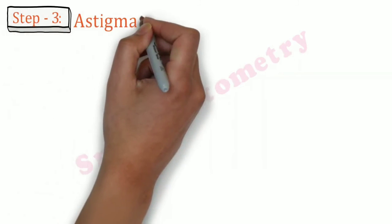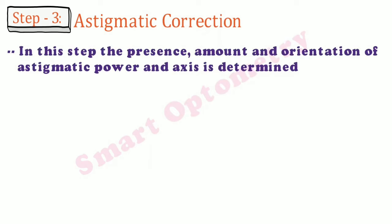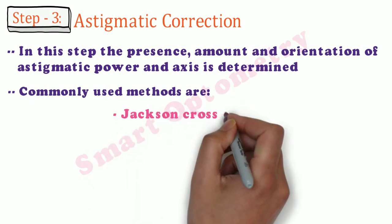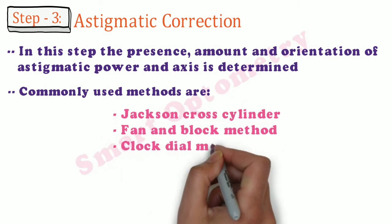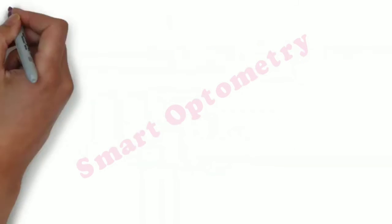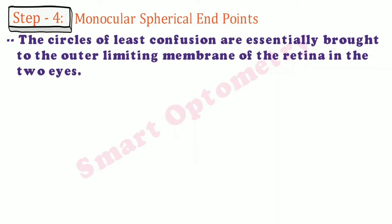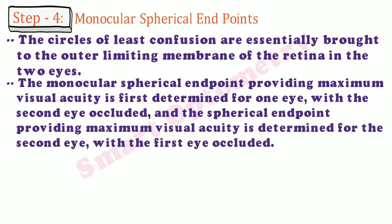Step 3 — Astigmatic Correction: the presence, amount, and orientation of astigmatic power and axis is determined. Commonly used methods are Jackson Cross Cylinder, Fan and Block Method, Clock Dial Method, and Stenopaic Slit Method. Step 4 — Monocular Spherical Endpoints: the circles of least confusion are essentially brought to the outer limiting membrane of the retina in both eyes. The monocular spherical endpoint providing maximum visual acuity is first determined for one eye with the second eye occluded, and then the spherical endpoint for the second eye is determined with the first eye occluded.